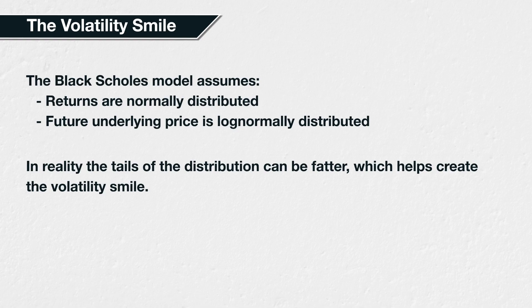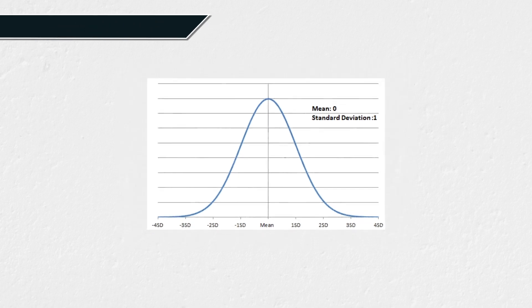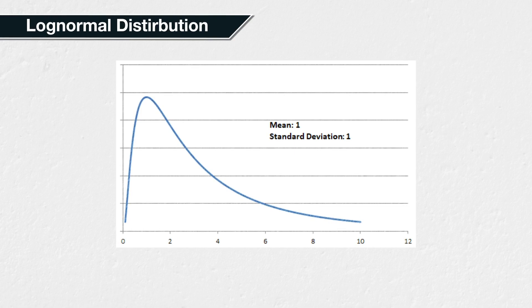A distribution curve displays how some set of data is distributed across a range of values. When we talk about a normal distribution, this is the type of distribution curve we are talking about. This is actually the standard normal distribution, with a mean of zero and a standard deviation of one. And this is an example of a lognormal distribution, with a mean of one and a standard deviation also of one.